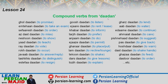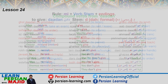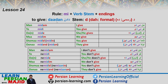Today we have the verb DADAN, which means 'to give'. It is very important and makes a lot of other compound verbs. You can see here a list I made — there are even more. From this long list, today we're going to work on only these eight verbs: GOL DADAN, SIFARISH DADAN, NISHON DADAN, JAWAB DADAN, TOWZIH DADAN, GARZ DADAN, and PAS DADAN.